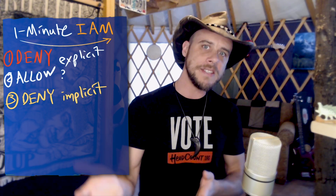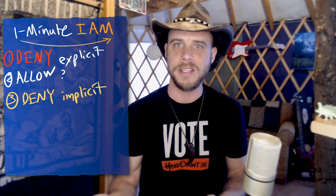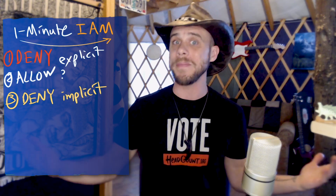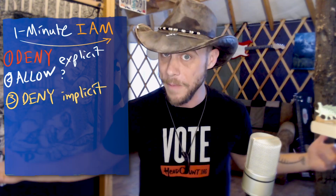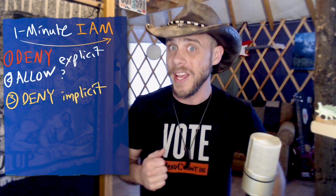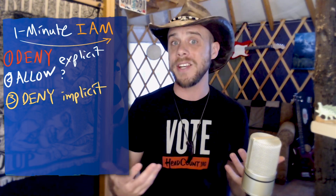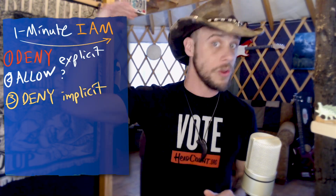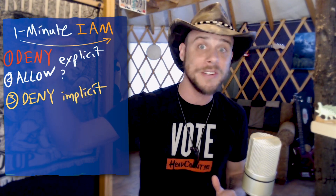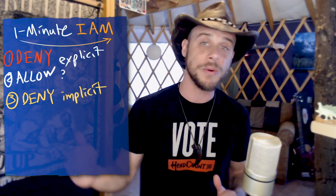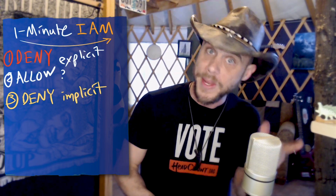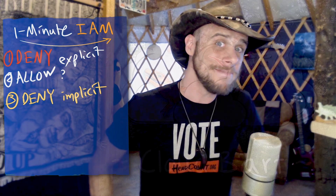In the end, this simple permissions evaluation process works within a single policy and it works across statements across multiple policies as well. Things get a little trickier — and we'll save that for another lesson — when we start considering how the hierarchy works with organization service control policies, permissions boundaries, on into identity, resource, and some of the other interesting permission schemes. So stick around and hopefully we'll see you next time.